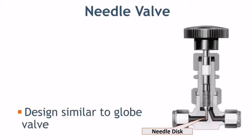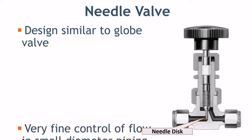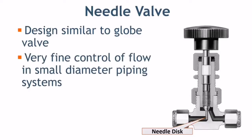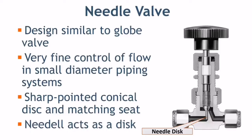Needle valves are similar to globe valves in design, with the biggest difference being the sharp needle-like disk. Needle valves are designed to give very accurate control of flow in a smaller diameter piping system. They get their name from the sharp pointed conical disc and matching shape.